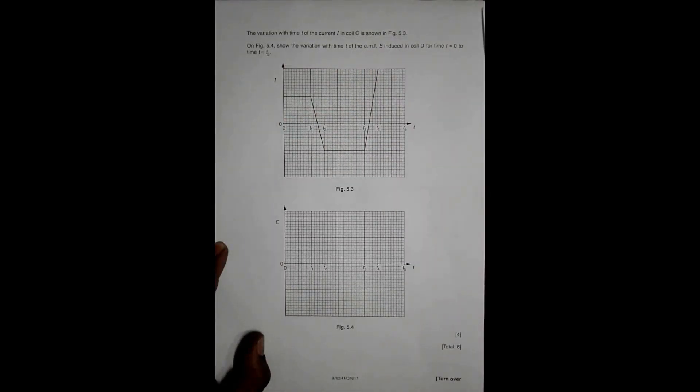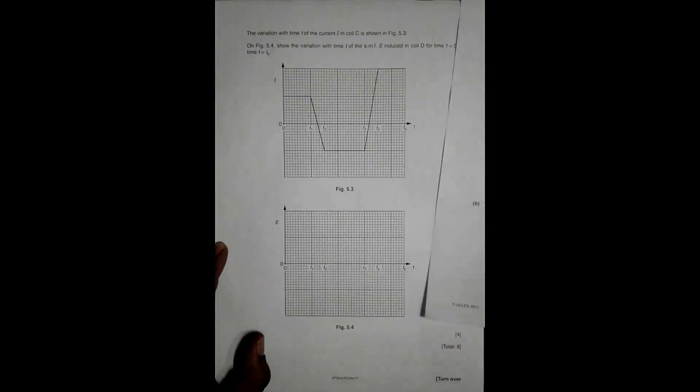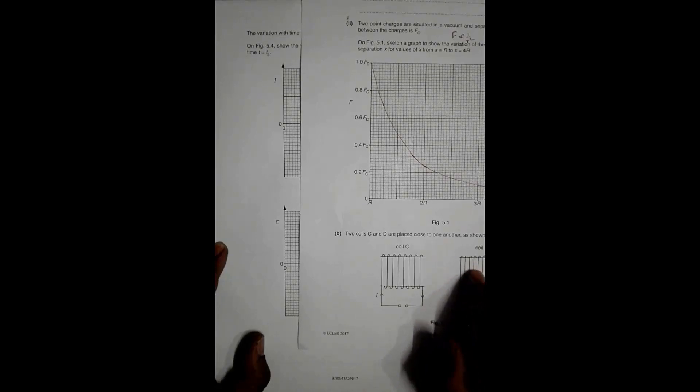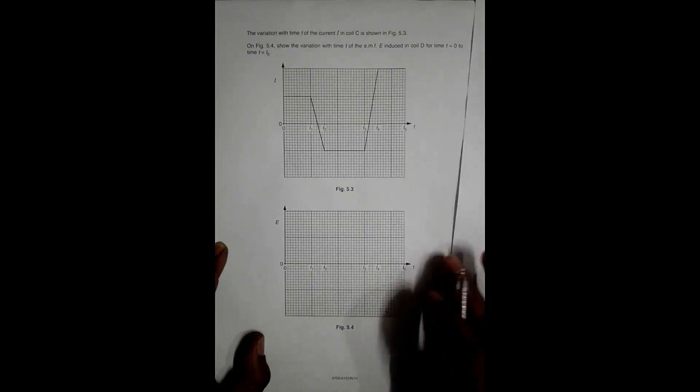On figure 5.4 we have to show the variation with time T of the EMF E induced in coil D, from T=0 to T=5. The EMF is given by E = −dΦ/dt, and since flux Φ is proportional to current I, we have E = −K(dI/dt). This means if the current is constant, dI/dt equals zero, and therefore the induced EMF is zero.